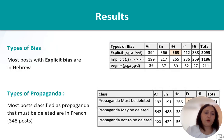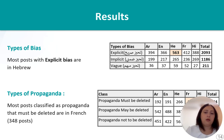For the type of bias, this table shows the distribution of the type of bias among the five languages. We can see that most posts with explicit bias are in Hebrew. For the type of propaganda, the table shows that most posts classified as propaganda that must be deleted are in French.